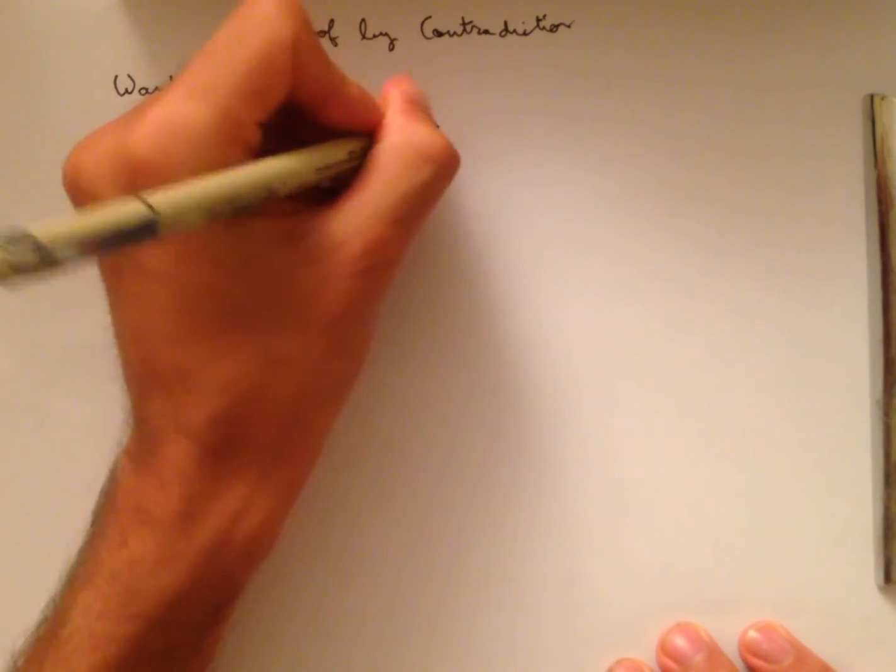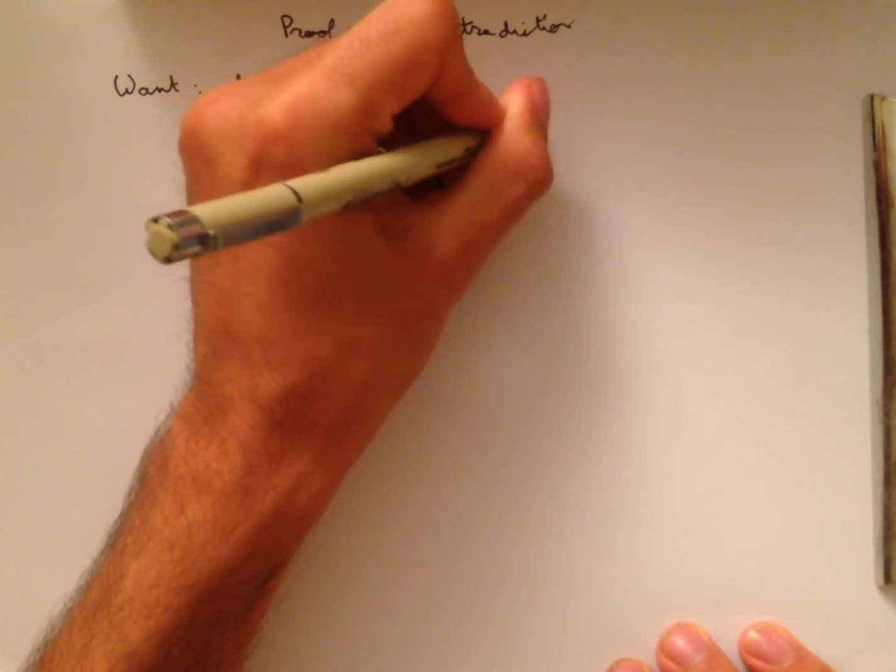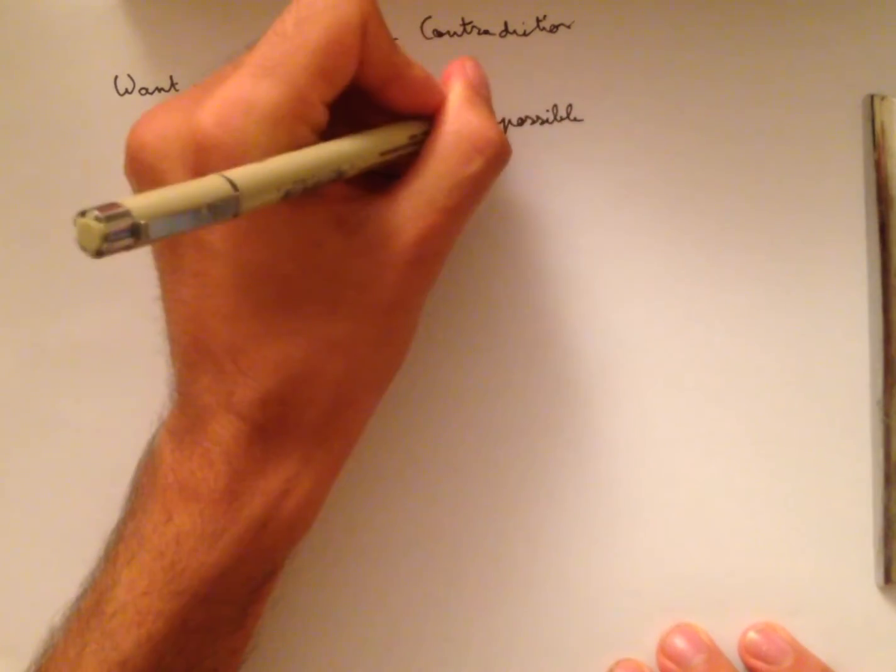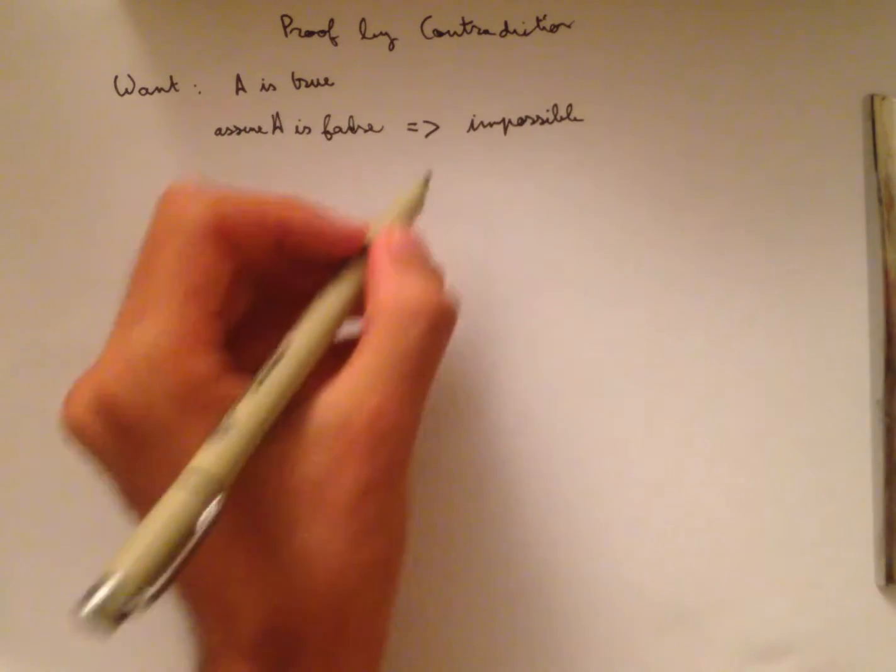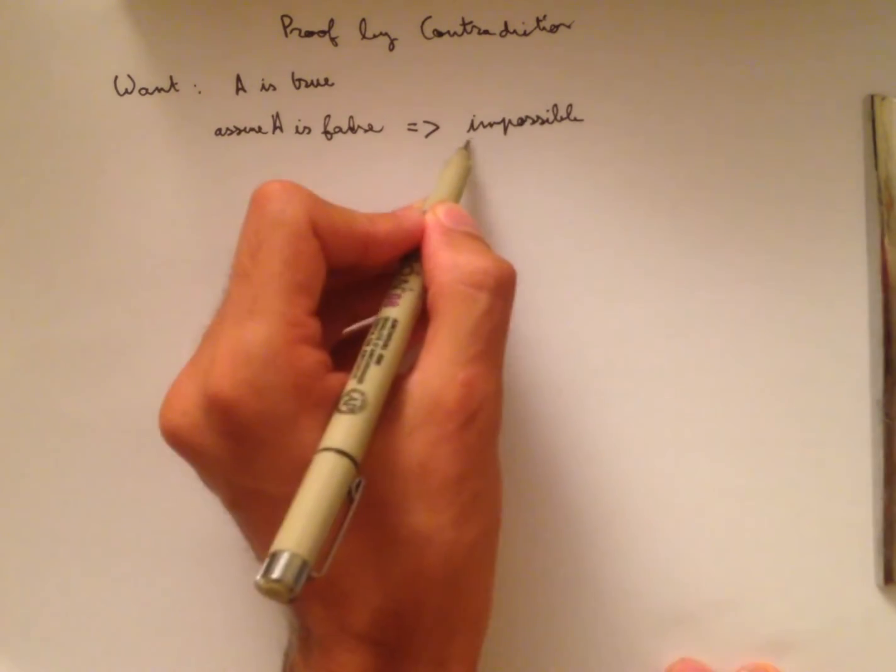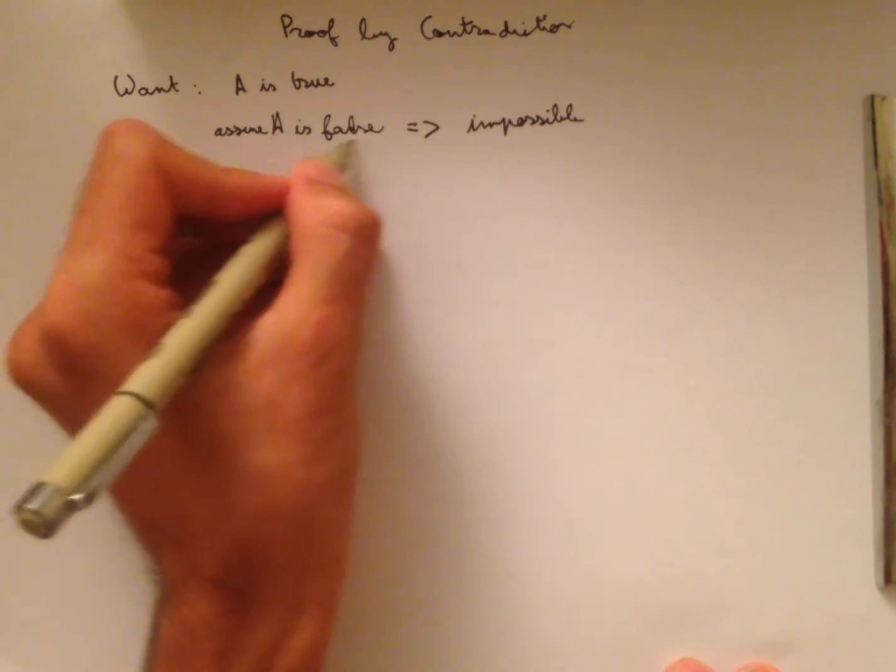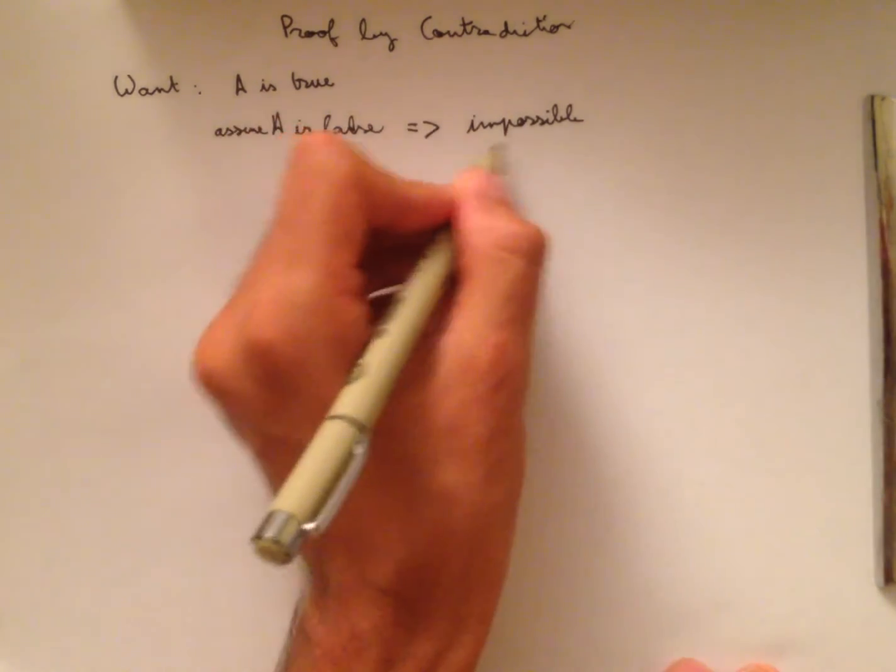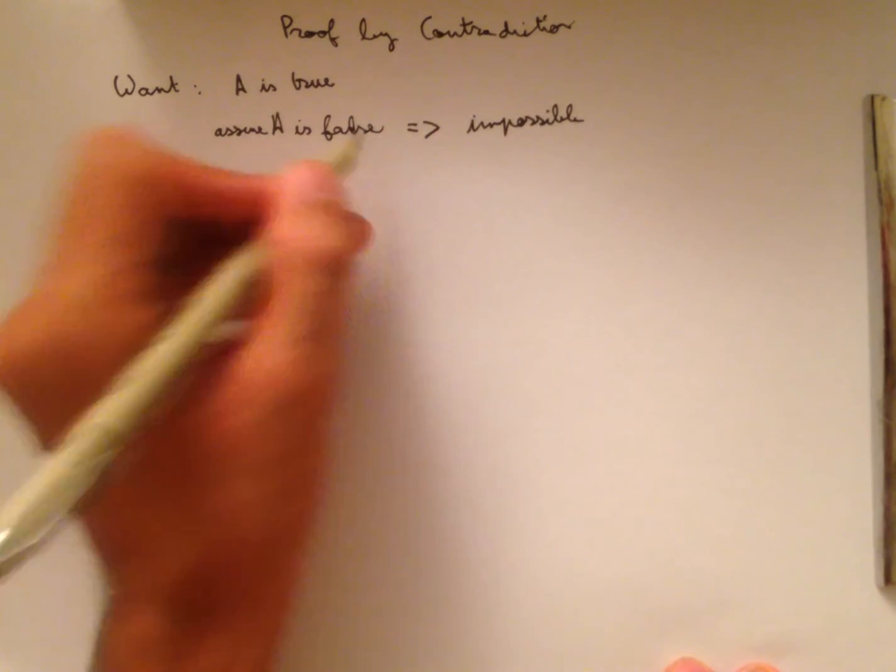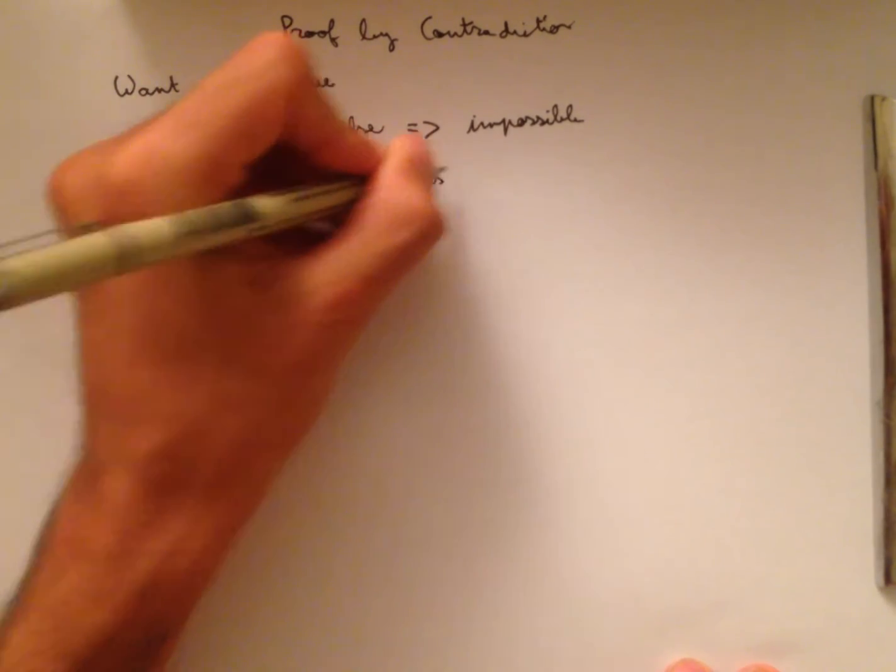And we show that this implies something that is impossible. This symbol here means implies. It means that if this happens, then this happens. So if A being false makes something impossible happen, then it's impossible for A to be false, and so we get that A is true.